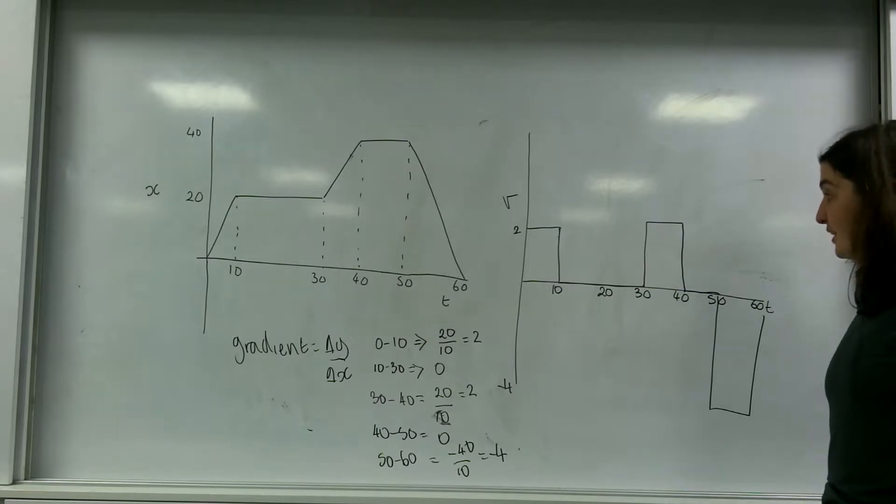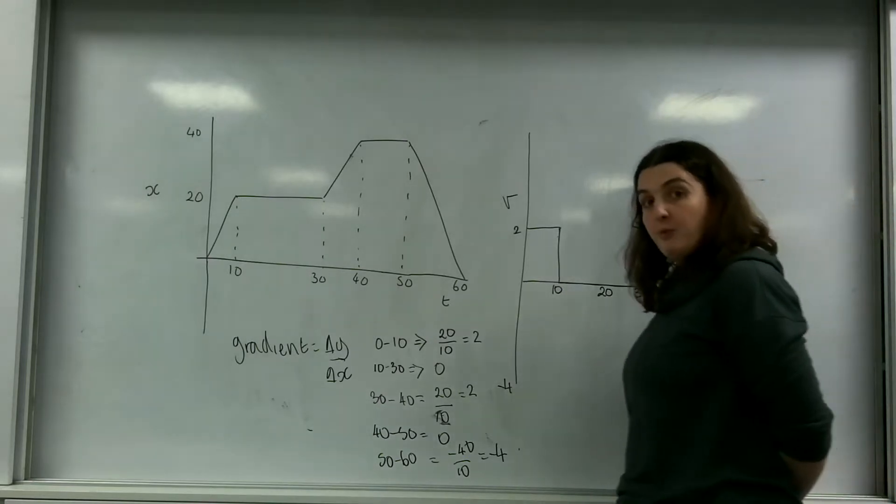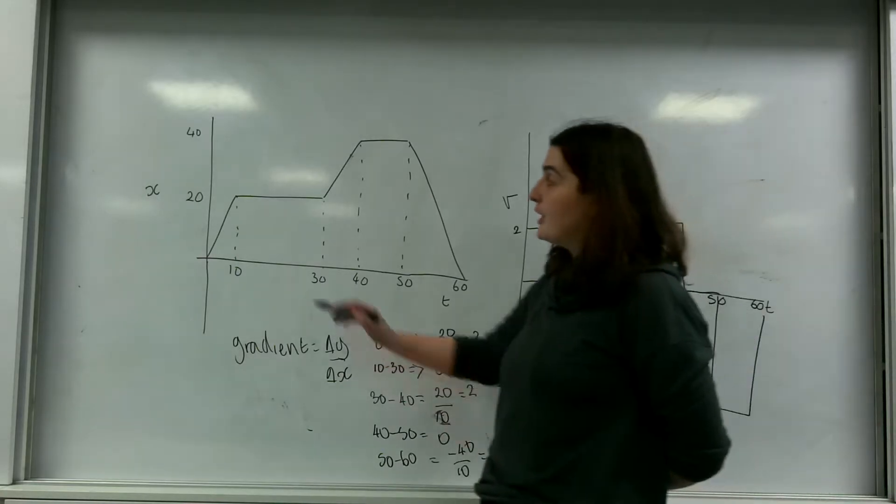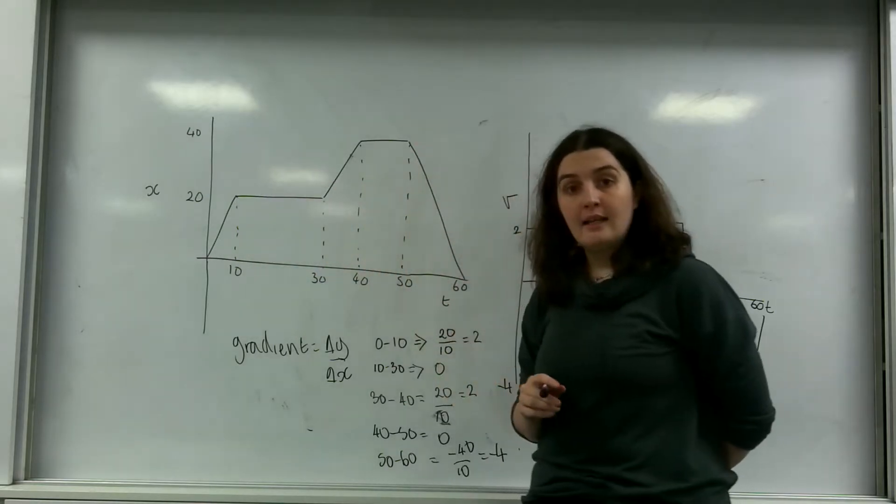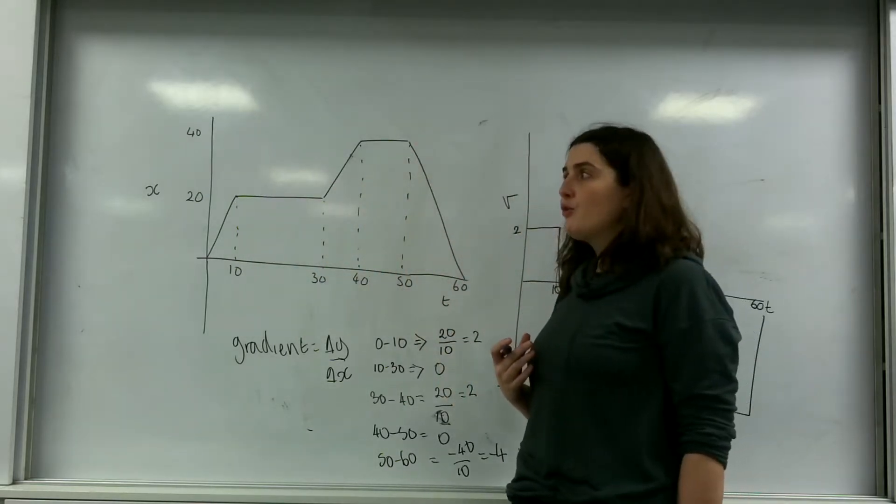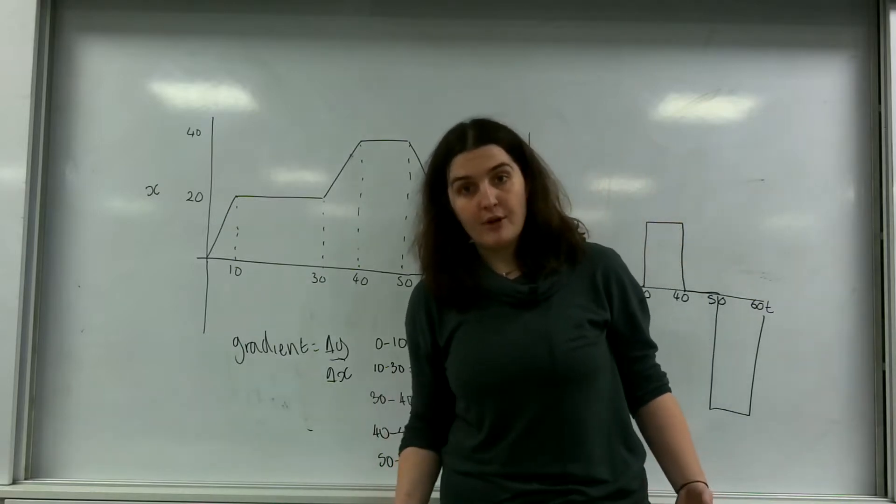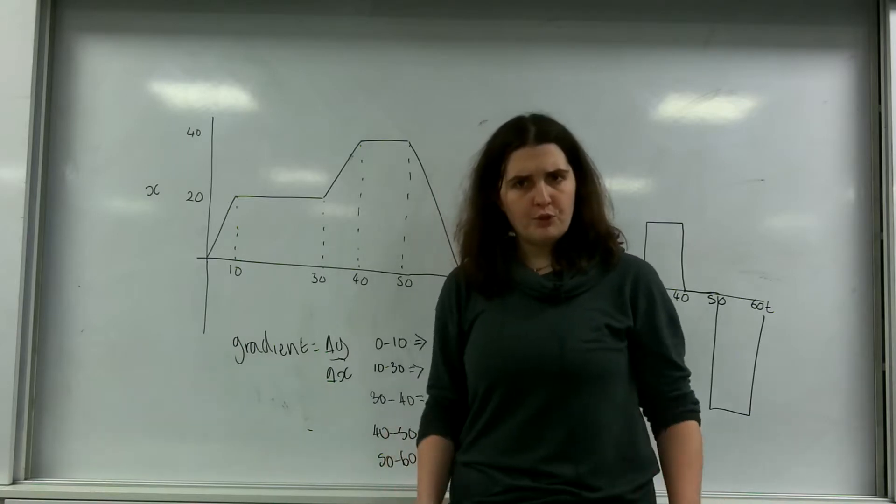But really interestingly, here I can actually work out a few more interesting things. Now in total, this person has travelled 20, 40 and back again. The amount of displacement they have is 0. They have gone there and back again.